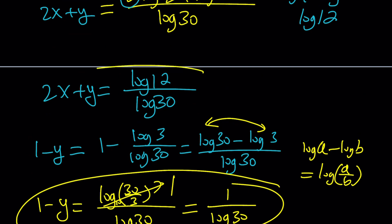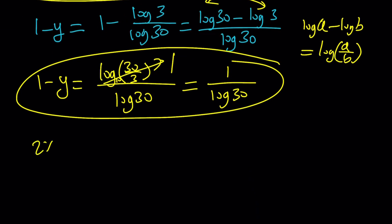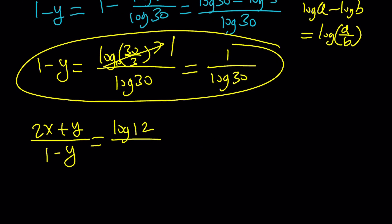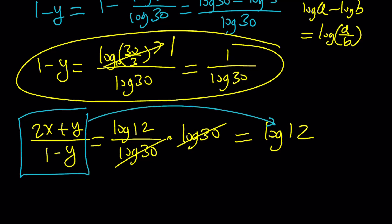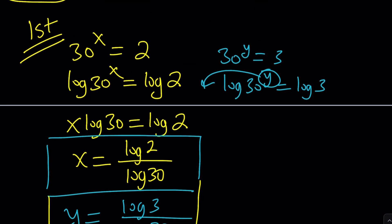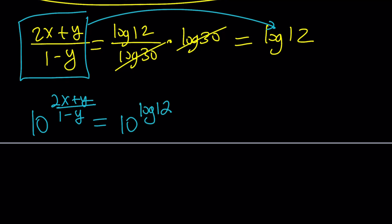So 2x plus y is log 12 over log 30, and 1 minus y is 1 over log 30. Dividing 2x plus y by 1 minus y: log 12 over log 30, multiplied by the reciprocal log 30, gives us log 12 — the log 30 cancels out. That quotient equals log 12. Since the problem asks for 10 to the power of that quotient, we get 10 to the power log 12. Using the rule that 10 to the power log b equals b, the answer is 12.